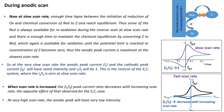When the scan rate is increased from the slowest rate to higher scan rates, the anodic to cathodic peak current ratio will decrease. This is the opposite effect observed in the ERCI case. At very high scan rate, you may not see any anodic peak at all, or even if you can, it will have very low intensity.